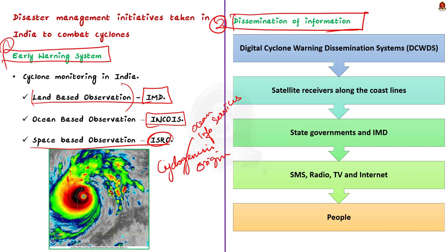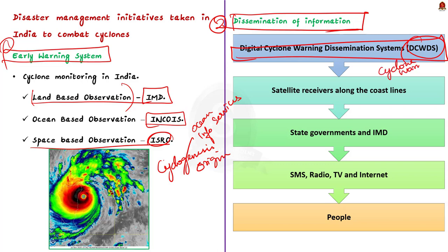In India, we have the Digital Cyclone Warning Dissemination System, in short called DCWDS. This DCWDS creates and transmits cyclone warning messages to unmanned satellite receivers installed all along the Indian coastline. The IMD and the state government use this information to alert the public using radio, TV, SMS, and the internet.